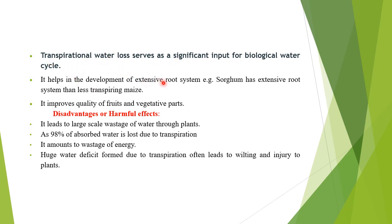Transpiration also helps in the development of an extensive root system — sorghum has a more extensive root system than less-transpiring maize. It improves quality of fruits and vegetative parts. However, harmful effects include wastage of water — 98% of absorbed water is lost — amounting to wastage of energy. Huge water deficit due to transpiration can cause wilting and injury to plants, which is why we call it a necessary evil.